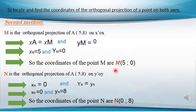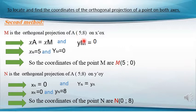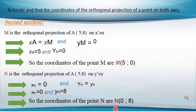Let's wrap up. We are finding the orthogonal projection of point A(5, 8) on the x-axis and y-axis. The orthogonal projection of A on the x-axis: we delete the ordinate, so the coordinates are (5, 0). The orthogonal projection of A on the y-axis: we delete the abscissa, so the coordinates are (0, 8). N is the orthogonal projection of A on the y-axis with coordinates (0, 8).